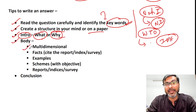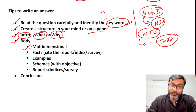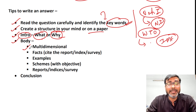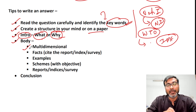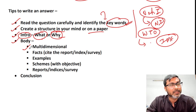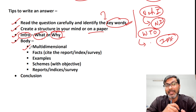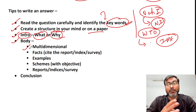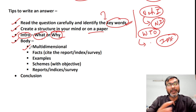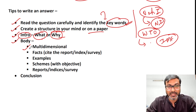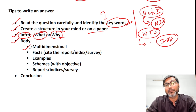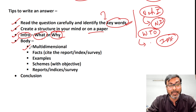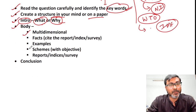Then come to the body, which should be multi-dimensional. I have noticed in various essays and answers that students stick to one point only. No — give various dimensions to your answer so the examiner gets to know about the bigger sphere of your knowledge. Your answer should be multi-dimensional: social aspects, economic aspects, and political aspects if applicable.